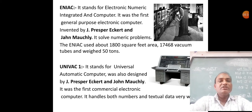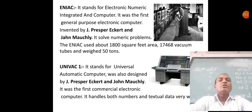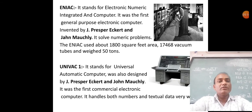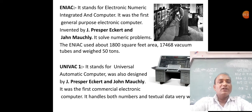The next computing device is UNIVAC I, which stands for Universal Automatic Computer. It was also designed by J. Presper Eckert and John Mauchly. It was the first commercial electronic computer and could handle both numbers and textual data very well.